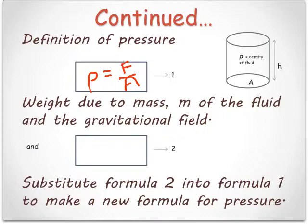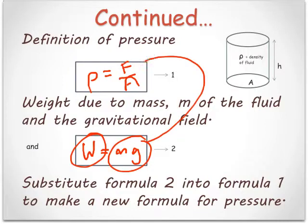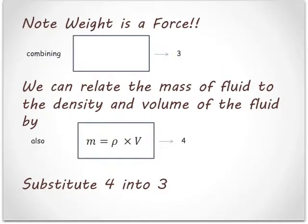Weight due to a mass M of the fluid and the gravitational field. So what's the weight of this fluid? Well, if we know the mass and the gravity, it's just W equals mg. We're going to substitute formula 2 into formula 1 for the force. Remember, this is a force, so we're going to put that into that equation there for force. So what we get is pressure equals mass times gravity divided by area.